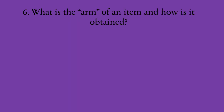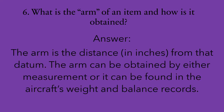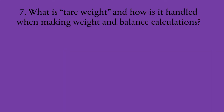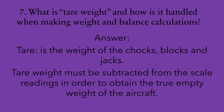Question number six: what is the arm of an item and how is it obtained? The arm is the distance in inches from the datum. It can be obtained by measuring it or found in the aircraft's weight and balance records. Number seven: what is tare weight and how is it handled in weight and balance calculations? Tare weight is the weight of the chocks, blocks, and jacks. Tare weight must be subtracted from the scale readings to obtain the true empty weight of the aircraft, since chocks, blocks, and jacks are not part of the aircraft itself.